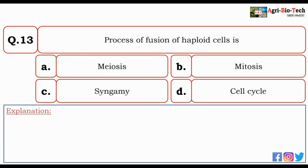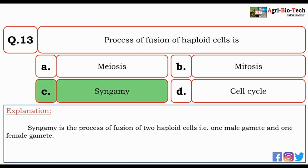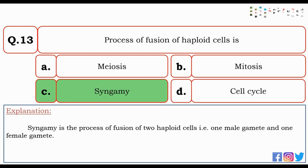Next question: process of fusion of haploid cells is — meiosis, mitosis, syngamy, or cell cycle? The correct option is C — syngamy. Syngamy is the process of fusion of two haploid cells, i.e., one male gamete and one female gamete.